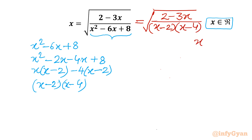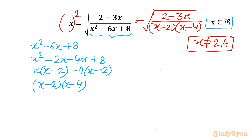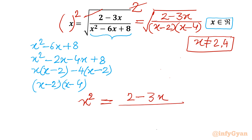The denominator cannot be zero, so x cannot be 2 and x cannot be 4. Now let us square both sides. Squaring the LHS and RHS allows us to cancel the square root and square, so our equation becomes x squared equals (2 minus 3x) over (x squared minus 6x plus 8).